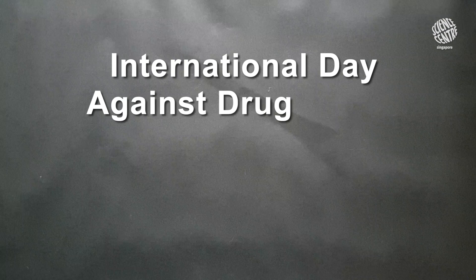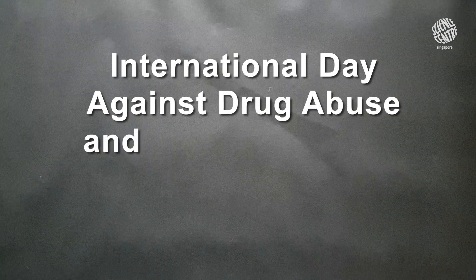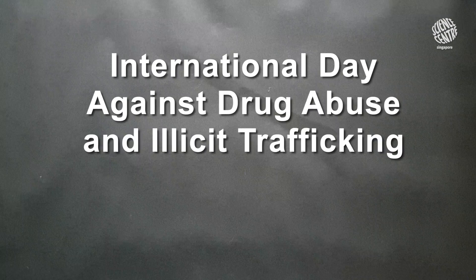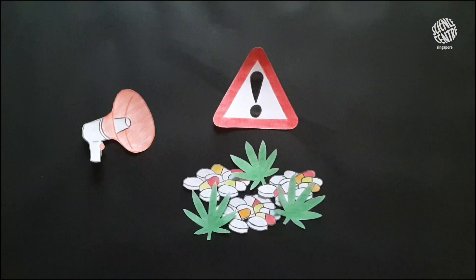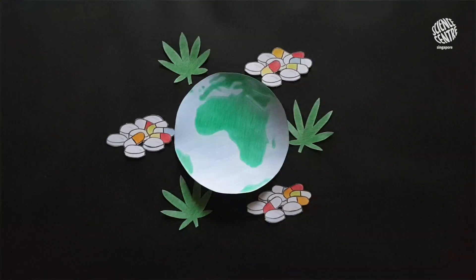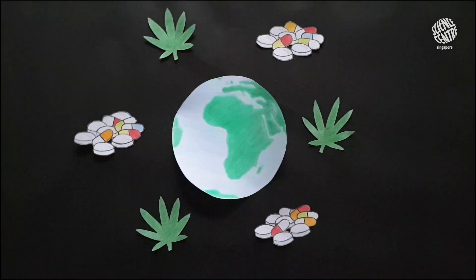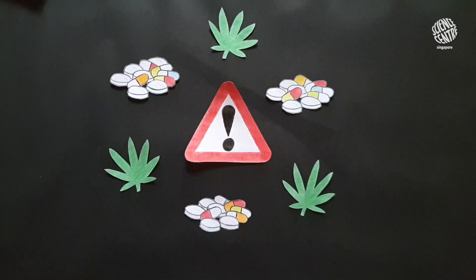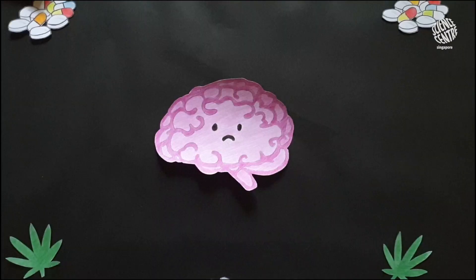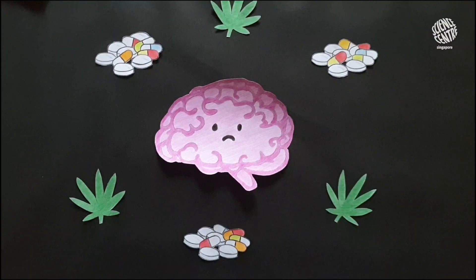International Day Against Drug Abuse and Illicit Trafficking is annually observed on 26 June to raise awareness on the dangers of drugs and to strengthen global action to achieve a world free from drug abuse. So what are the dangers of drugs? How do they affect our mind?